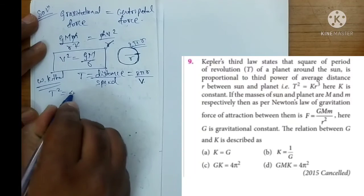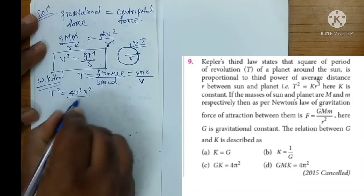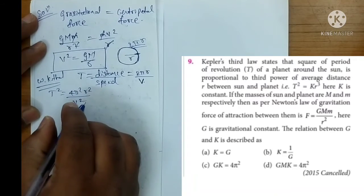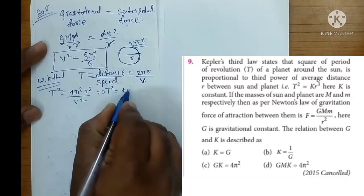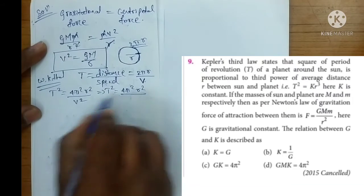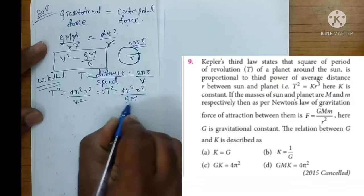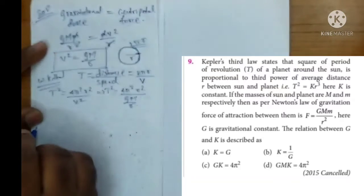Square it: T² = 4π²r²/v². Then substitute the value: T² = 4π²r² divided by v², which is GM/R.